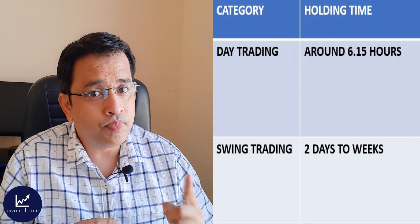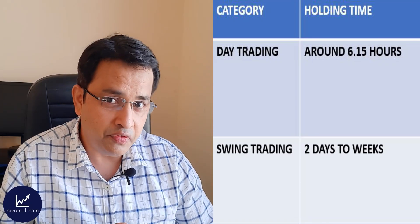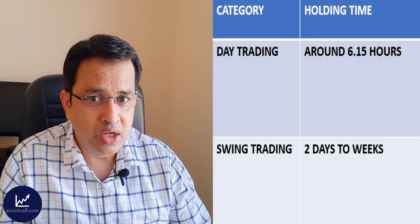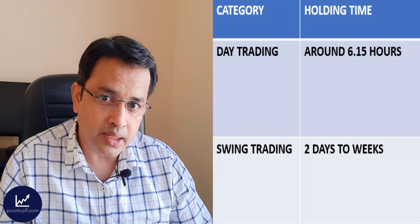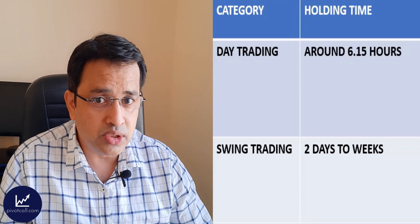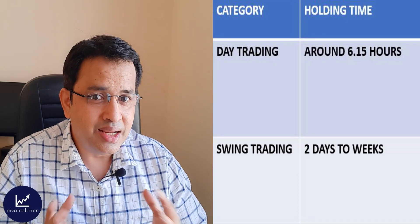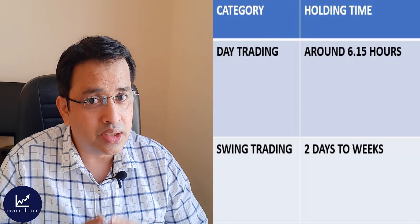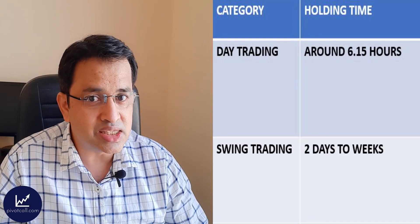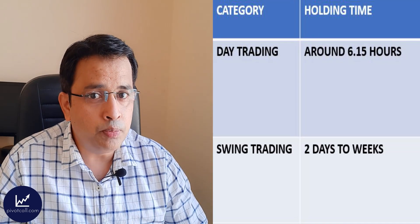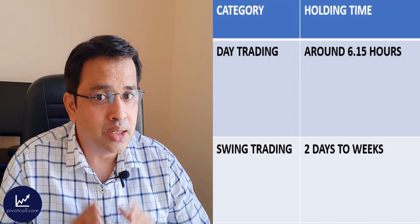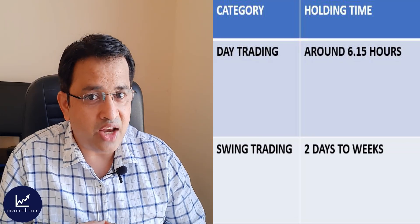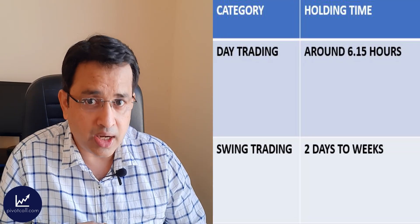The first breakdown point is holding time. In day trading, holding time is around 6 hours and 15 minutes — market opens at 9:15 and closes at 3:30. In swing trading, you can carry forward your position, so holding time is anywhere between two days to weeks. In day trading, you have the restriction that you must square off your position before 3:30, whether in profit or loss, or your broker will square it off for you.